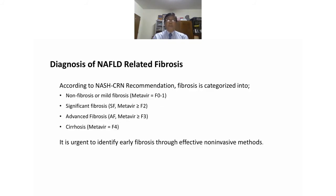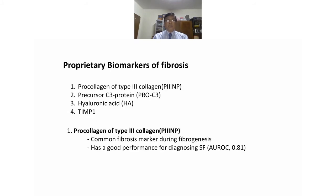For diagnosis of NAFLD-related fibrosis, we can classify fibrosis as: no fibrosis or mild fibrosis (F0–F1), significant fibrosis (F2), advanced fibrosis (F3), and cirrhosis (F4). It is urgent to identify early fibrosis through effective non-invasive methods. Proprietary biomarkers include collagen, pro-collagen type 3 N-terminal peptide (P3NP) — a precursor of type 3 collagen — hyaluronic acid, and TIMP-1.